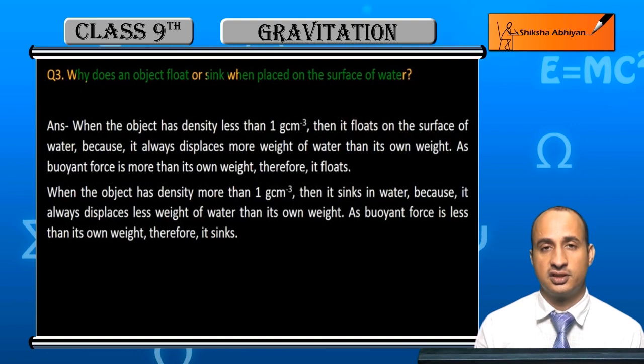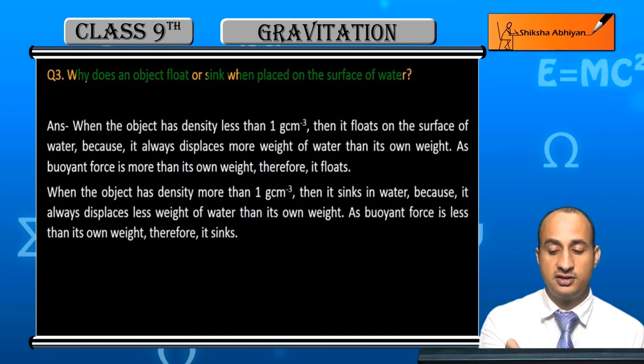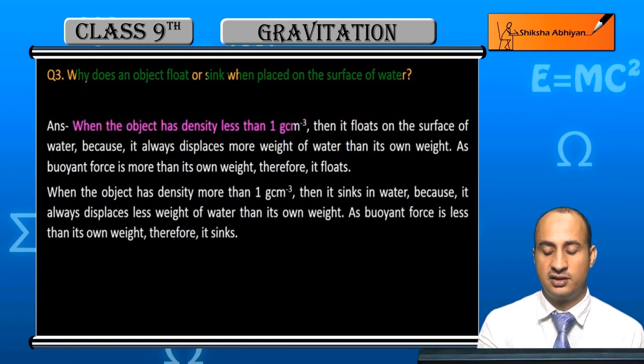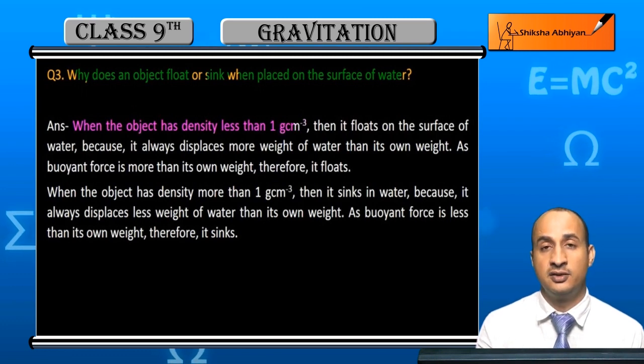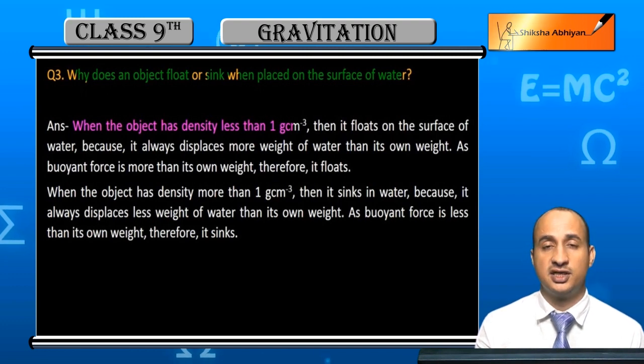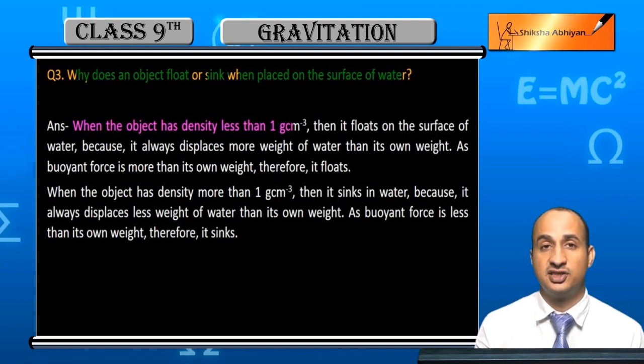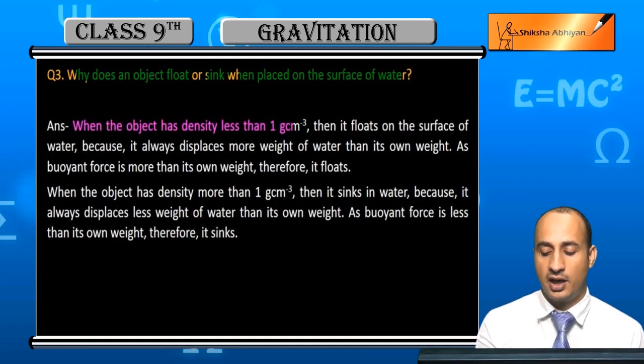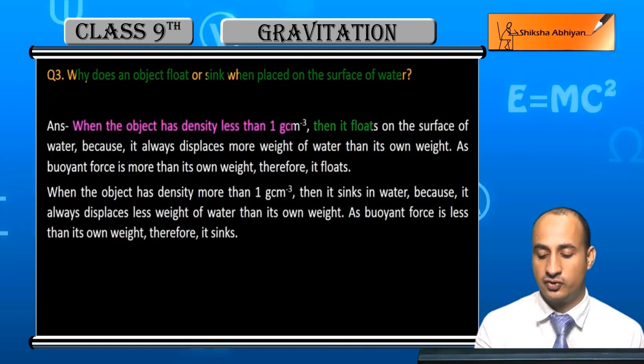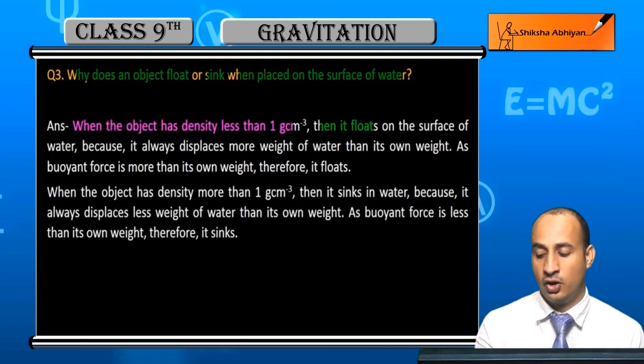Why does this happen? Now student, there are two conditions. When the object has density less than 1 gram per cubic centimeter—because 1 gram per cubic centimeter is the density of water—if density is less than this, then what happens? Then it floats on the surface of water.